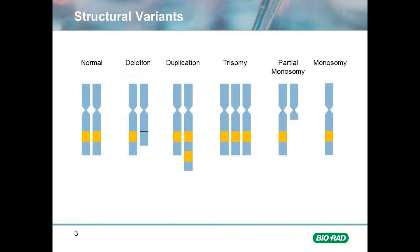Structural variants typically found include the deletion of one or multiple copies of the gene, duplications of part of the chromosome, trisomies, monosomies, and partial monosomies.